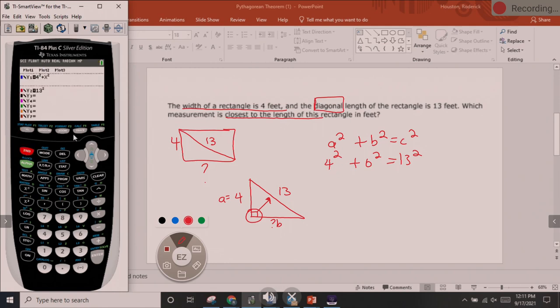Once we get it typed in, second trace, the number 5, press enter, enter, enter, and it gives us our answer of 12.36. So B equals 12.36.